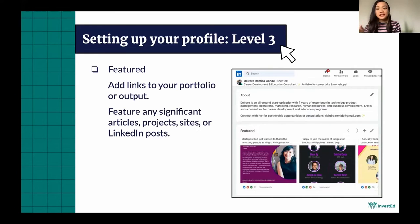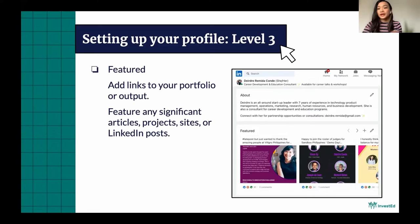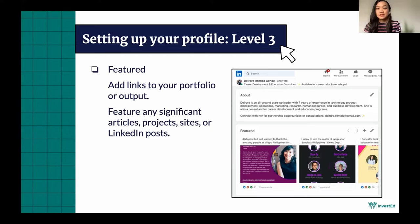You can feature any significant articles — if you were mentioned in an article, that's good. Some projects that you headed or created on your own, you can also feature there. In my case, I've featured some of the activities where I've mentored for some programs, a competition where I judged, and a webinar where I was featured. Those are things I put on my Featured section so that people know they can connect with me if they want to invite me as a mentor or as a speaker. In your case, if you want to get hired, maybe feature some work samples.